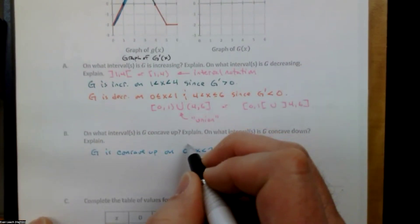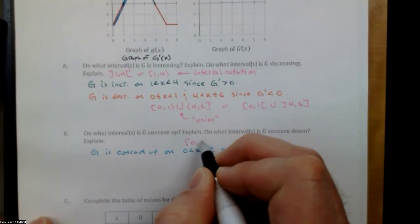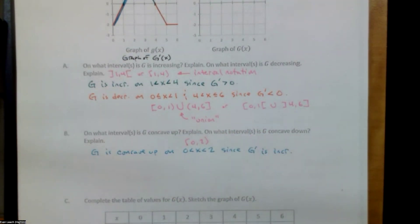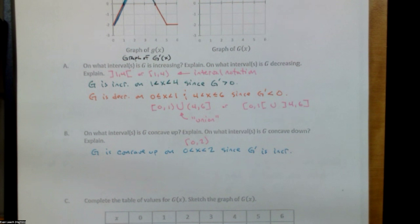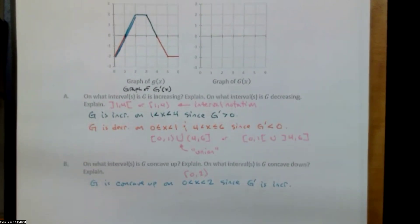We say G is concave up on (0, 2) because we see the derivative is increasing. My preference for interval notation is to use parentheses when things are not included — though some use the backwards brackets. Either way is acceptable. The other part of the question: where is capital G concave down? That happens when capital G prime is decreasing.